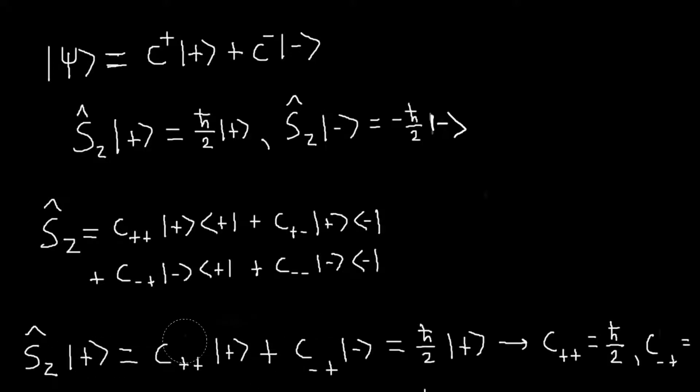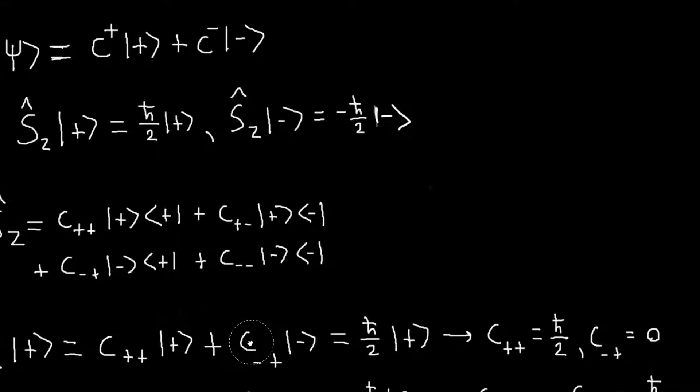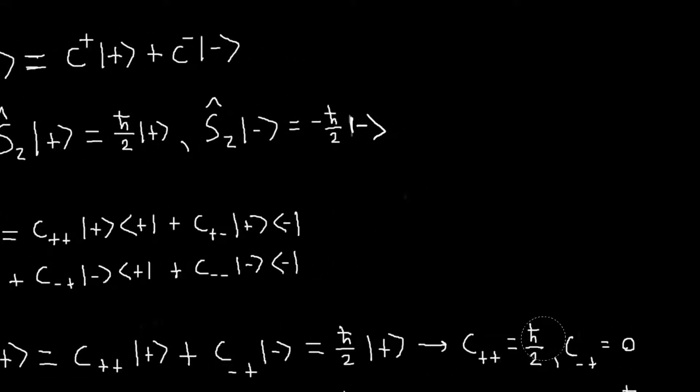And then I want that this should, or I've already said that this should be equal to h-bar over two times plus. So just looking at this equation, we can satisfy this if we choose C++ to be h-bar over two, and C minus plus to be zero.